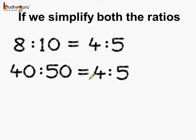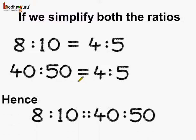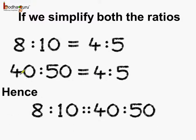So what do we see? Both the ratios are equal. So we can say 8 is to 10 is same as 40 is to 50. So 8 is to 10 is in proportion to 40 is to 50, and we read it as 8 is to 10 as 40 is to 50.